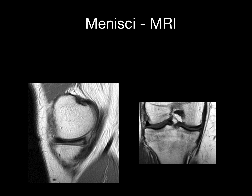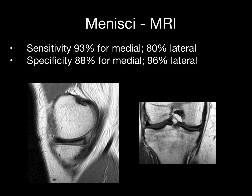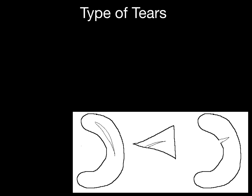How does MRI perform for tears? It does well. The sensitivity is 93% for the medial and 80% for the lateral. Specificity is 88% for the medial and 96% for the lateral.